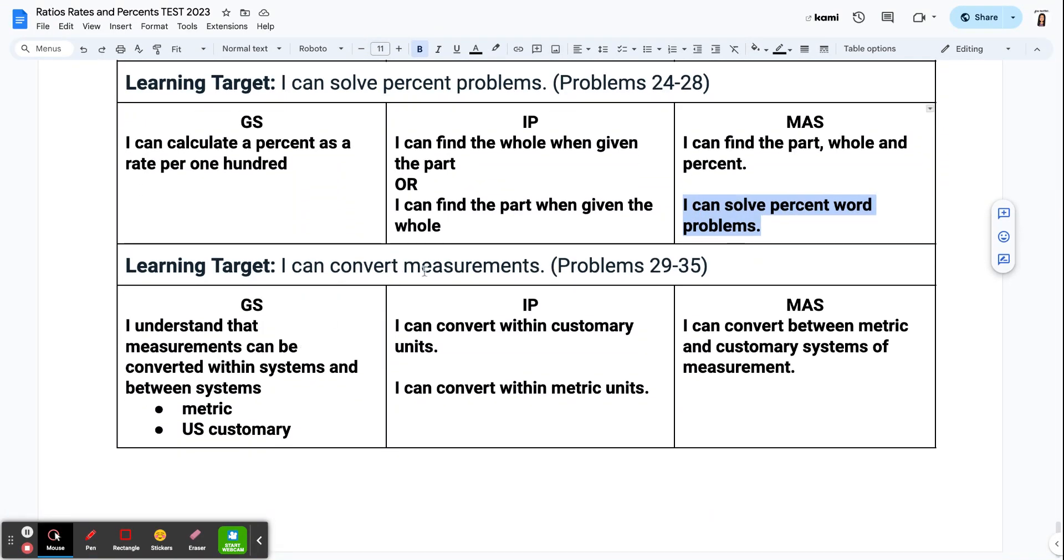And your last section is converting measurements. This is pretty easy. Do you understand that there is a metric and a U.S. customary system of measurement, that there's two different ones? Can you convert within U.S. customary? And can you convert within metric? So this is not any kind of crossover. Your mastery is when I can give you metric and you can go customary or customary to metric.